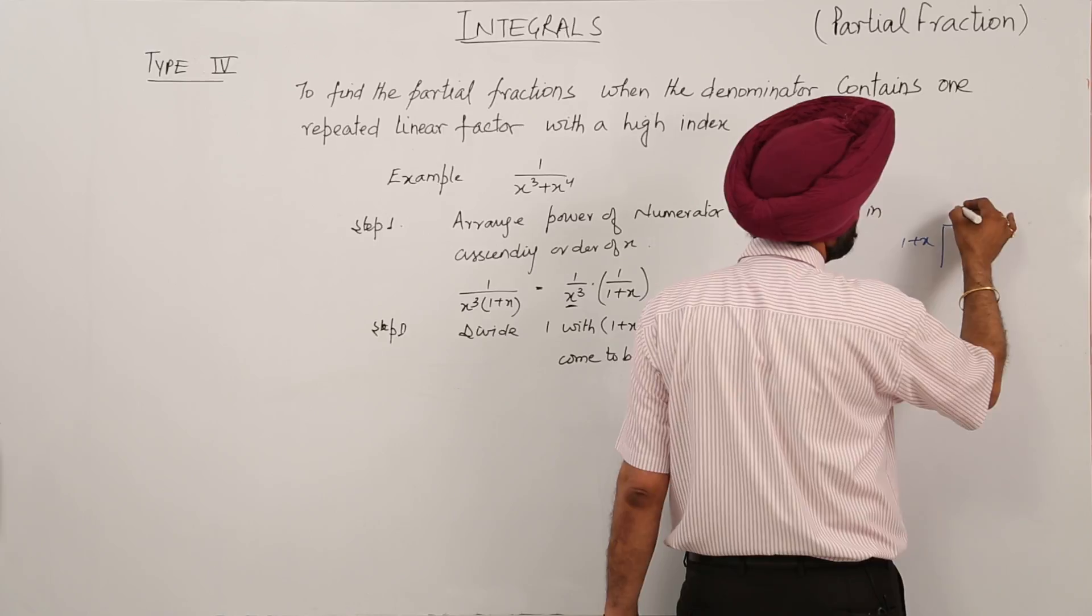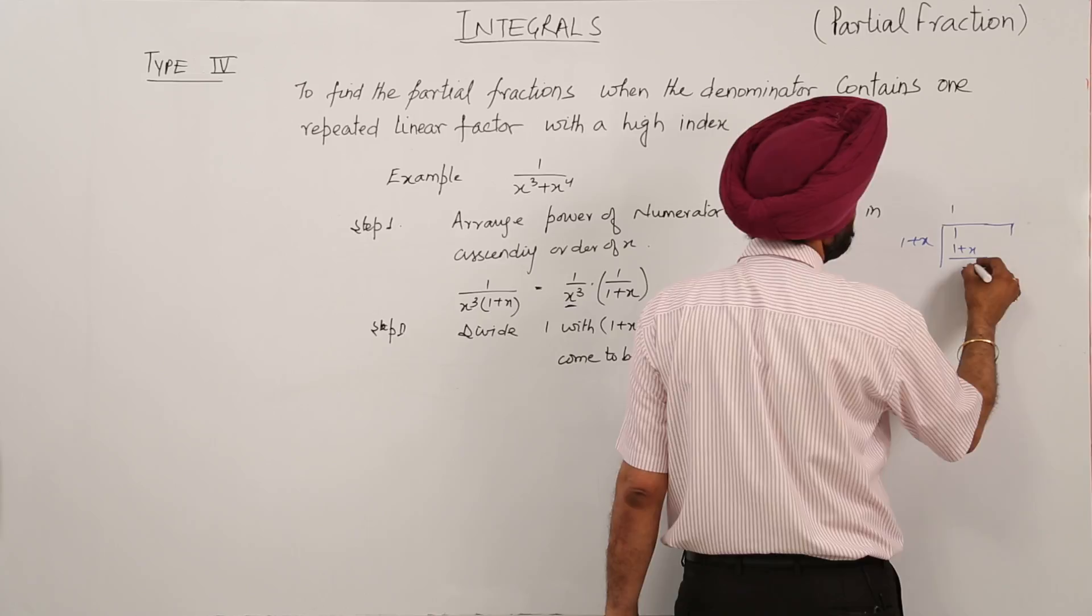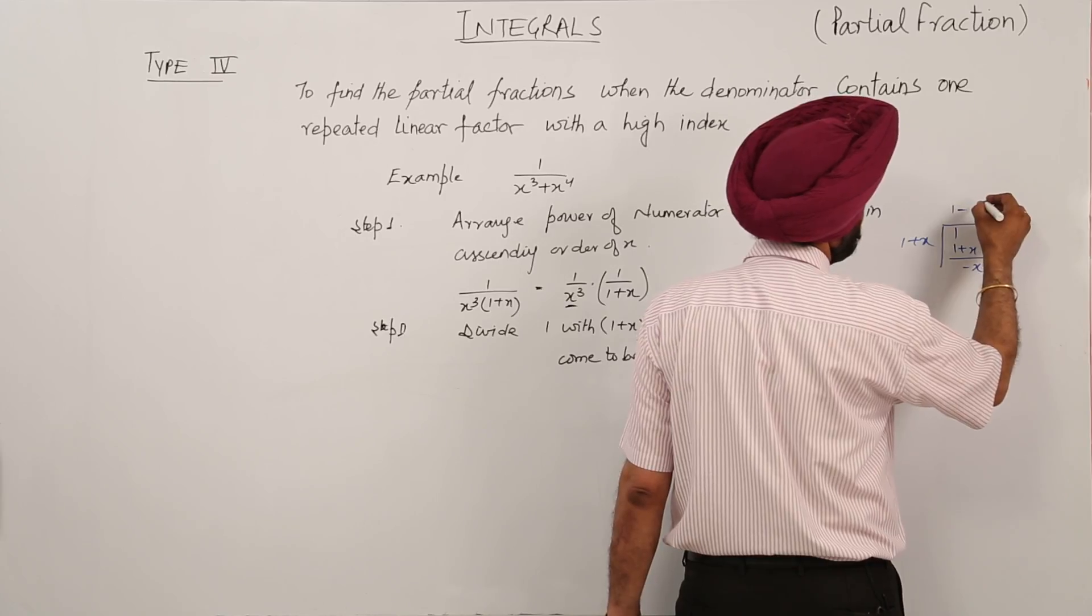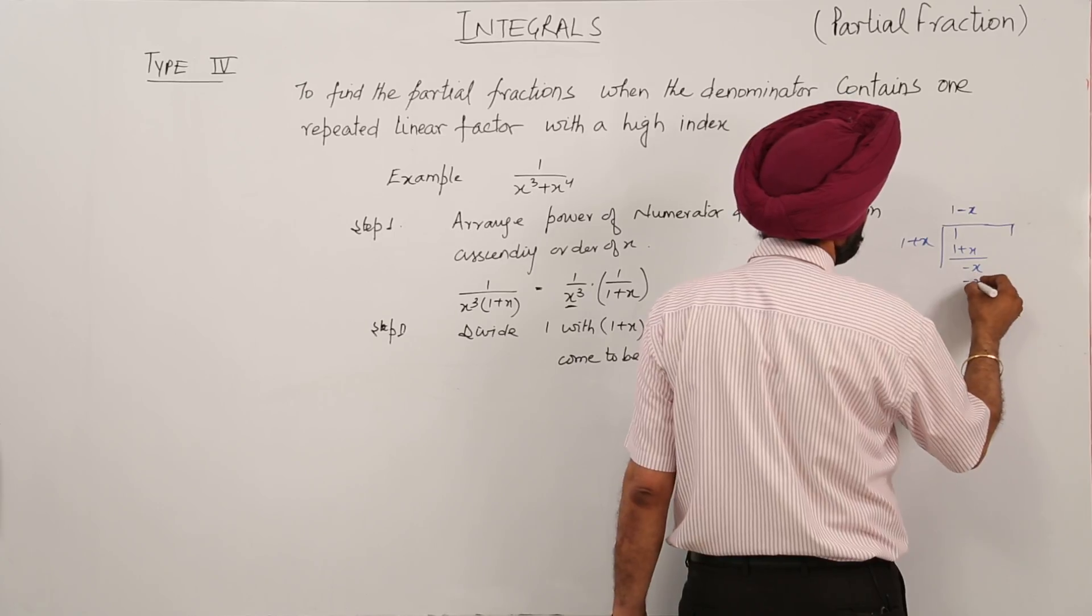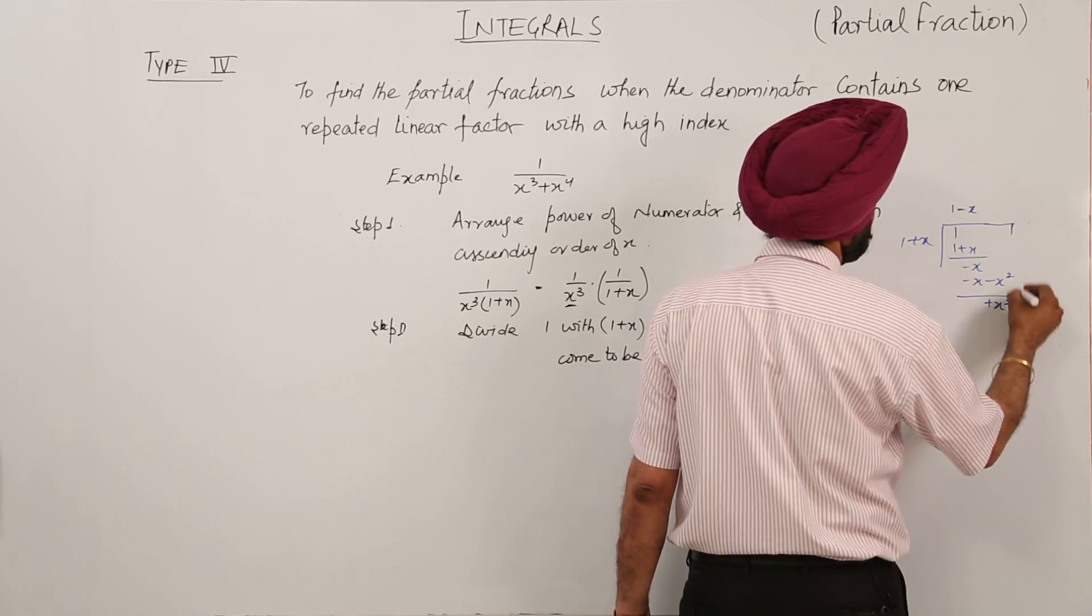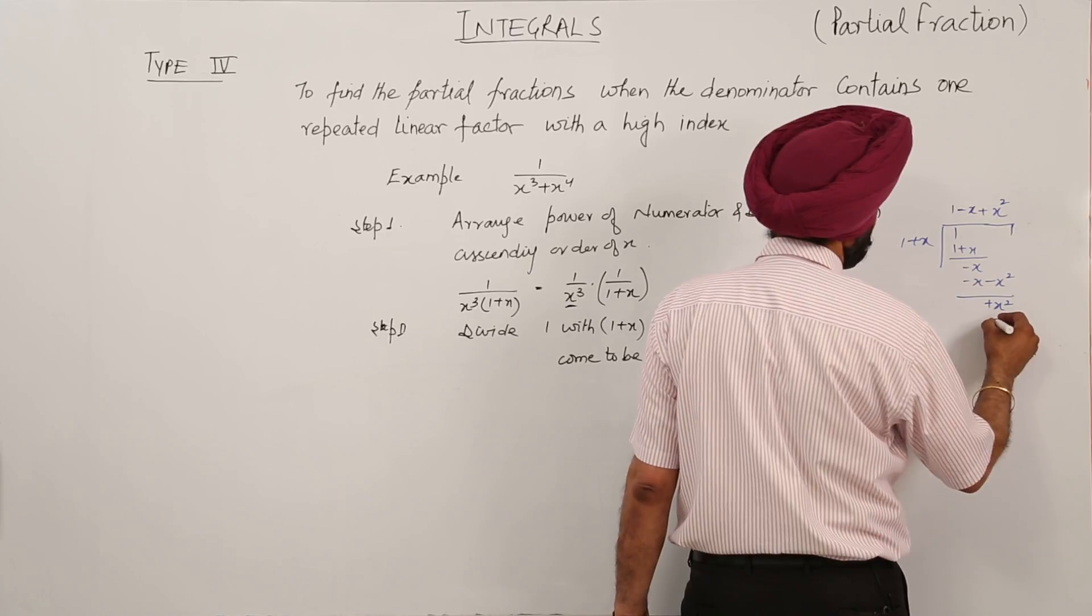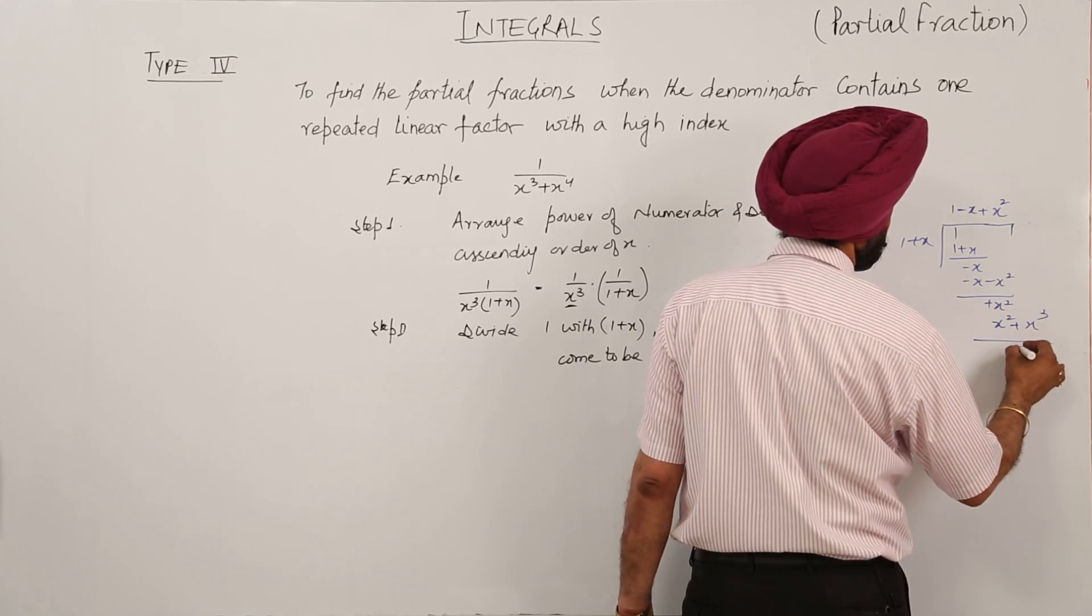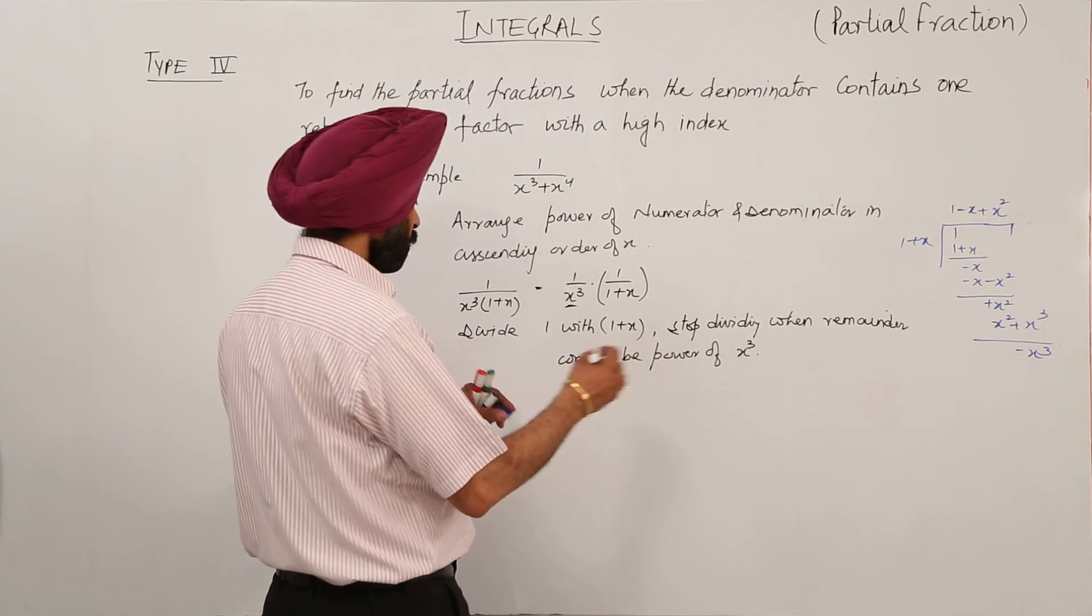First of all we are having 1 divided by 1 plus x gives us 1, then minus x. Then we are having minus x divided by 1 plus x gives minus x, and minus x minus x square gives us plus x square. Then plus x square divided by 1 plus x gives x square plus x cube. Then the remainder is minus x cube.